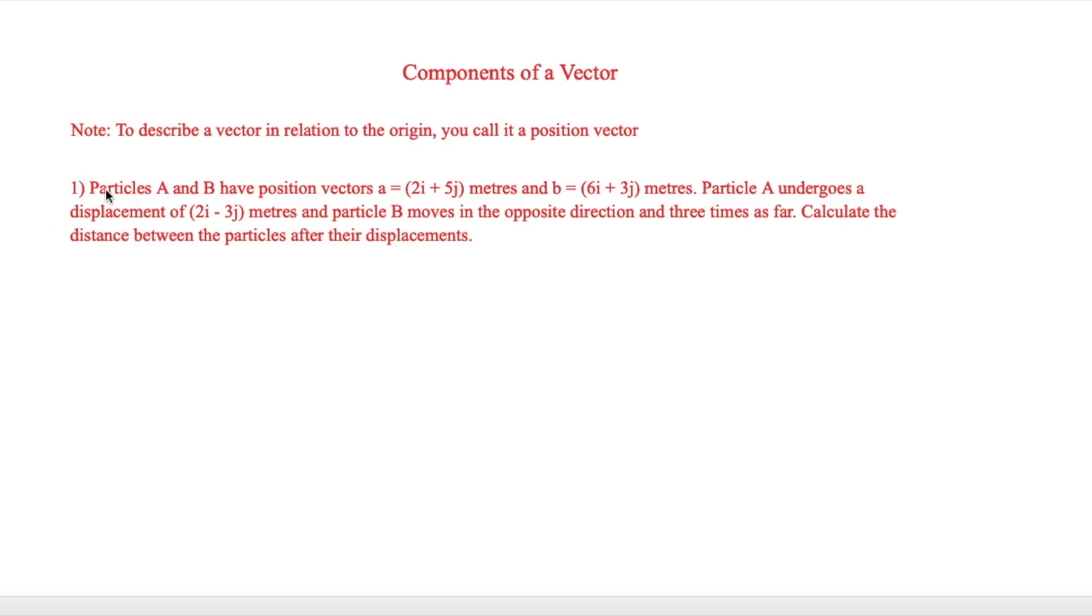Now the question here is asking that particles A and B have position vectors, which is from the origin, a is equal to 2i plus 5j meters, and b is equal to 6i plus 3j meters.